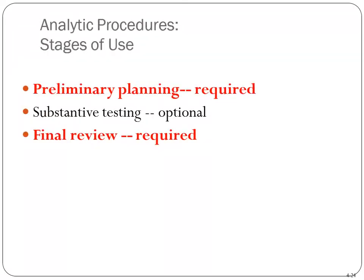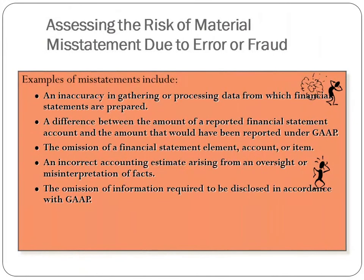For analytical procedures in an audit of public firms: preliminary planning is required, final review is required, and substantive testing is optional. Examples of misstatements include: inaccuracies in gathering and processing data; differences between reported amounts and GAAP; omission of a financial statement element; incorrect accounting estimates from oversight or misinterpretation of facts; and omission of information required to be disclosed under GAAP. For example, lease accounting disclosures must be examined carefully to ensure compliance with new rules.